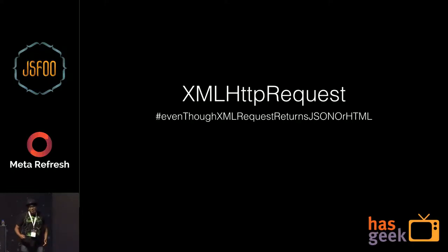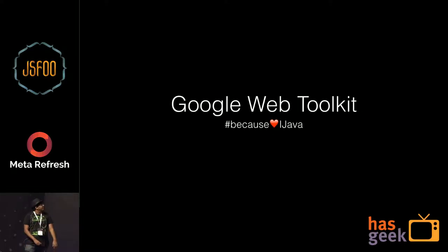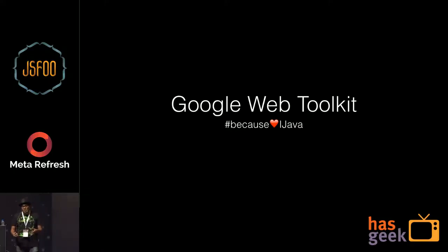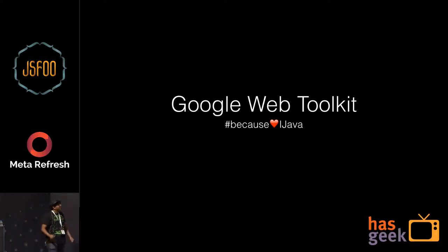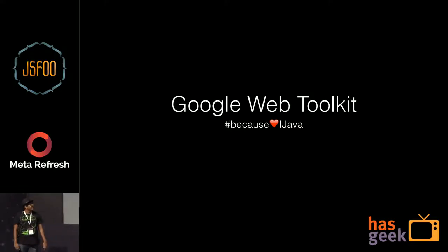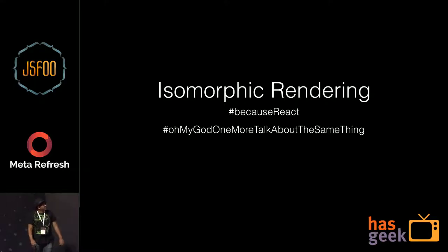The XMLHttpRequest was a real game changer, made famous by Gmail, which would render your email really fast. The next major advancement towards what I'd call isomorphic rendering came with Google Web Toolkit. Not many people speak about it these days, but in essence it let you write both your back-end and front-end code in Java, and would magically compile that Java into HTML views on the front end. For me, this was the first real attempt at isomorphic rendering.